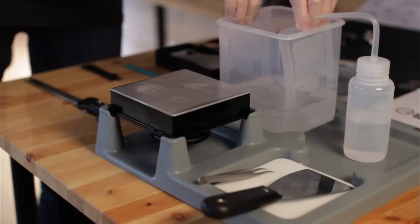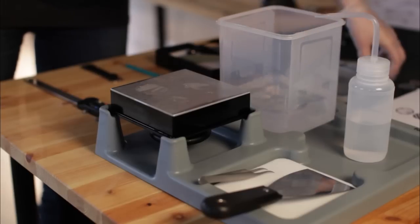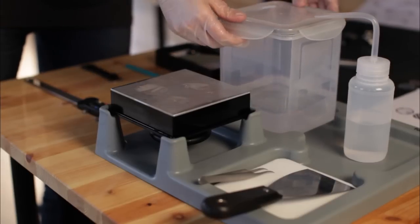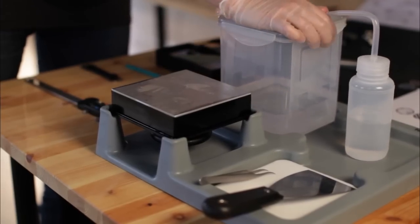Agitate the part using the rinse basket for a couple of minutes. If the part is very delicate, you may want to skip this step. Let the part soak for 10 minutes. This will remove any remaining uncured resin.